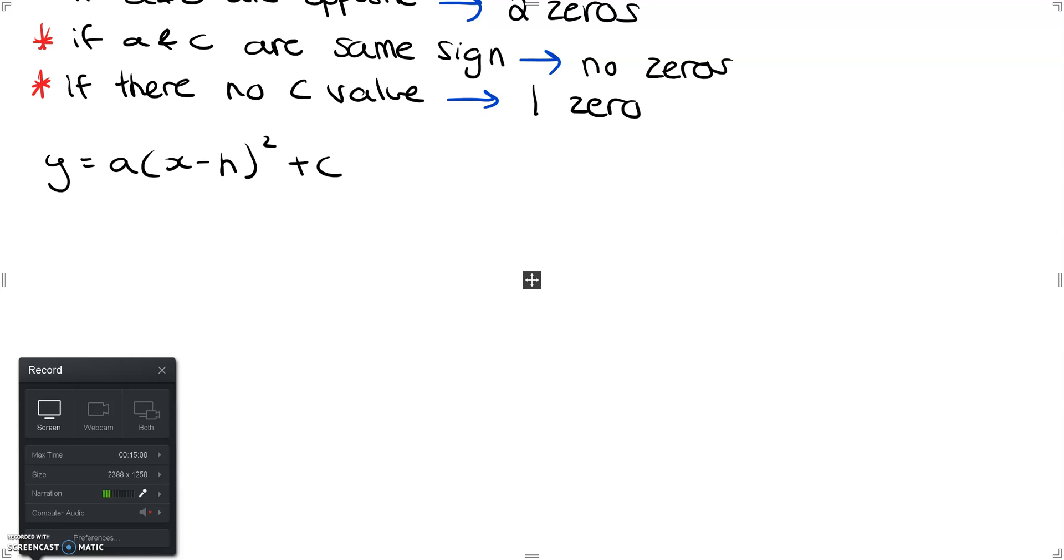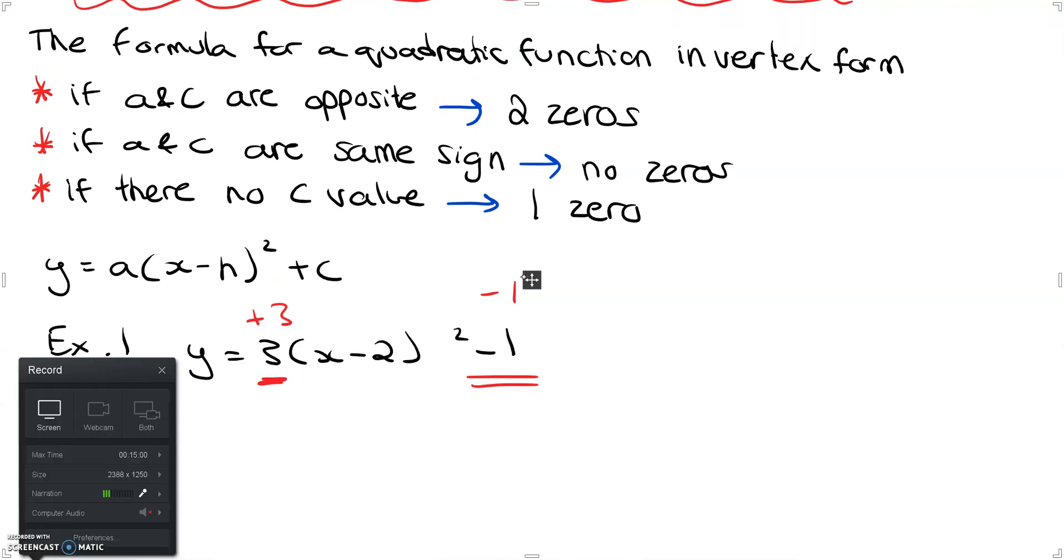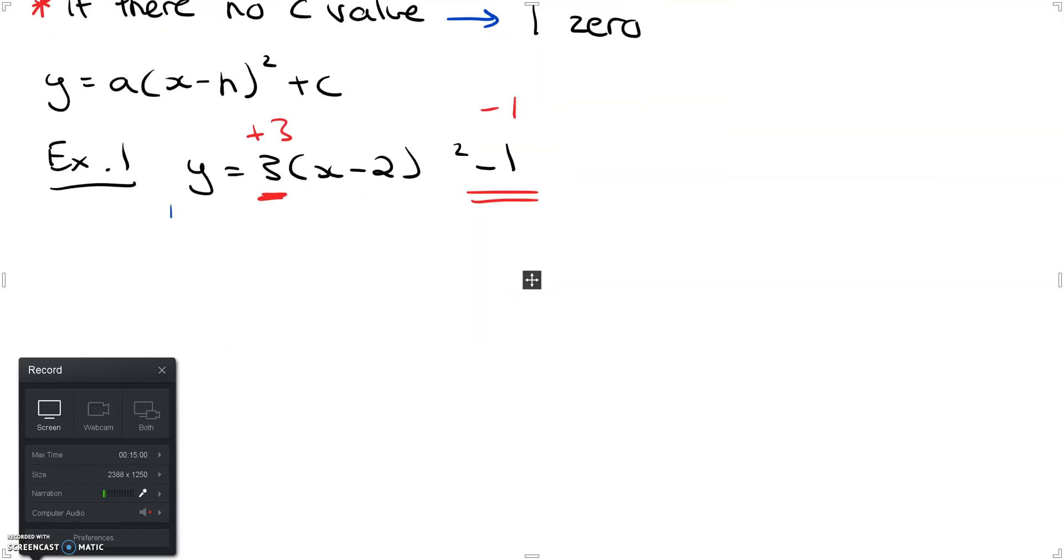Okay so if I were to look at some examples of this, I could say y is equal to 3 times x minus 2 squared minus 1. My a value here is positive 3 and then my c value here is negative 1. If I scroll back up I know that if a and c are opposites then I have two zeros, so I can conclude for this case I'm going to have two zeros.